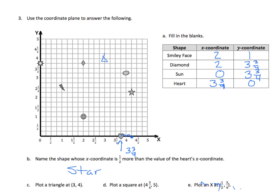Plot a square at four and three-fourths and five. I have my four and three-fourths right here, and I need to go up to five, which is all the way up at the top. So four and three-fourths and five is a square.